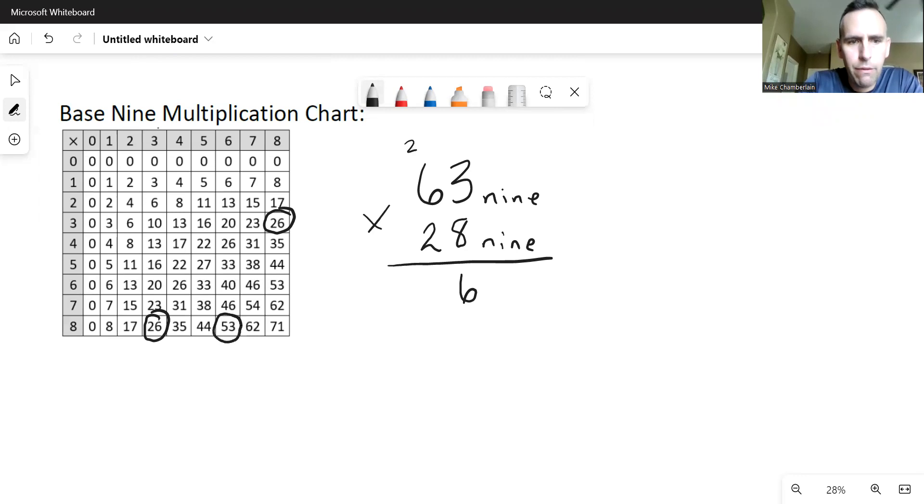And then I have eight times six. That is five, three. But I have to add in the two that I carried. So five, three, counting out loud, five, four, five, five. So that would be five, five. I'm going to cross that out.